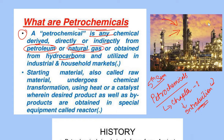Petroleum or natural gas is a hydrocarbon. Petroleum or natural gas is used in hydrocarbons and it can be utilized in industrial and household markets. So petroleum and natural gas are utilized in both industrial and household markets.